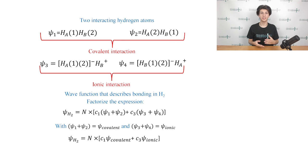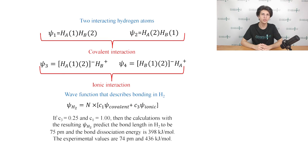We can further simplify this expression by denoting the sum of ψ1 and ψ2 as ψ-covalent, and ψ3 plus ψ4 as ψ-ionic. Based on this model of H2, calculations with c3 equals 0.25 gives us a value of 75 pm for H-H bond length and 398 kJ per mole for the bond dissociation energy. Note that c3 is equal to 0.25, meaning that the ionic terms contribute less to the overall wave function of the hydrogen molecule compared to covalent interactions. This result is consistent with our previous knowledge that the H-H bond is covalent. However, neglecting the ionic contribution can lead to significantly lower accuracy.